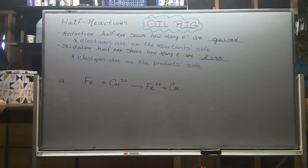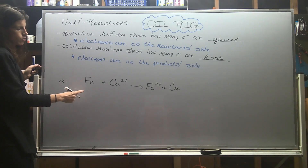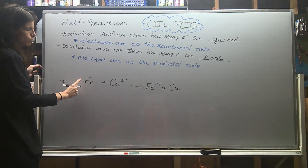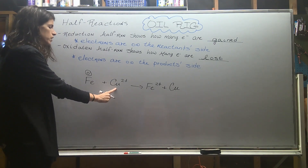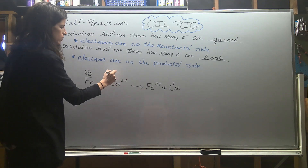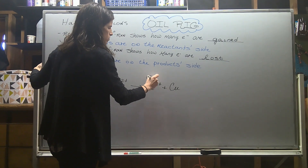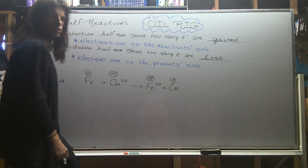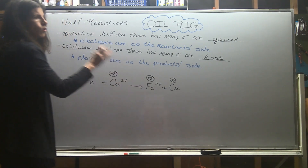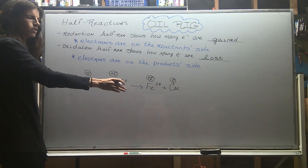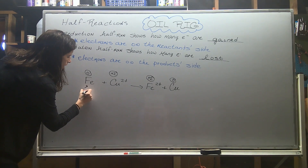Let's analyze our first example. The first step is to assign oxidation numbers. Iron is neutral and by itself, so it gets an oxidation number of zero. The copper cation has a plus two charge, so it gets plus two. Iron cation is plus two and elemental copper is zero. Looking at iron: it went from zero to plus two. When you go in the positive direction on the number line, you lose electrons — so iron underwent oxidation.